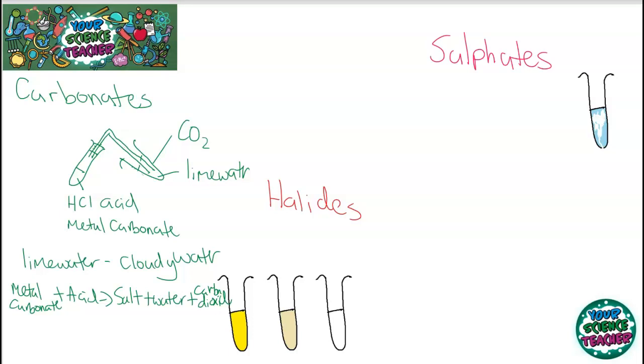To test for halides, you'll actually get three results depending on which halide is present. And what you need to do is you need to add nitric acid and silver nitrate to your potential halide mixture. And what you will see if you have iodide ions is you will see a yellow precipitate. For bromide, you will see it go creamy.